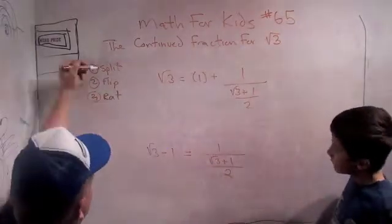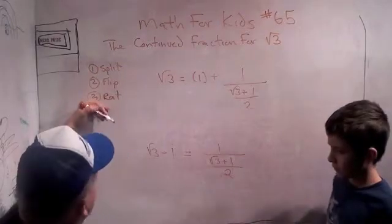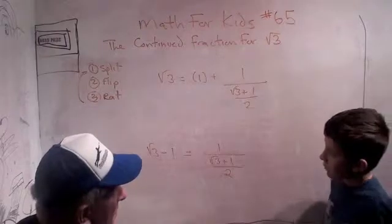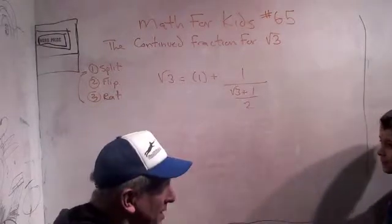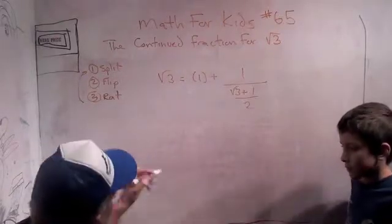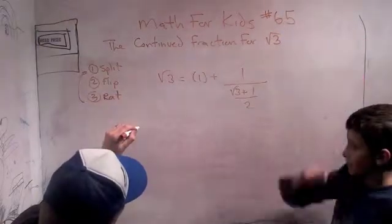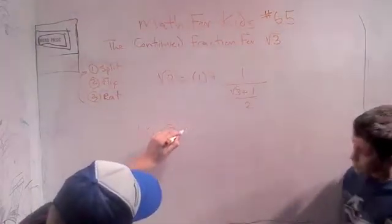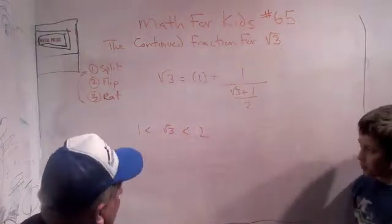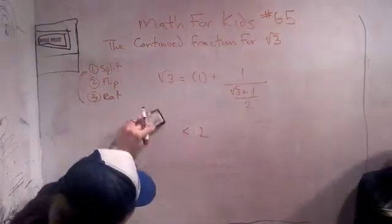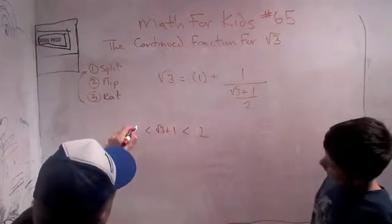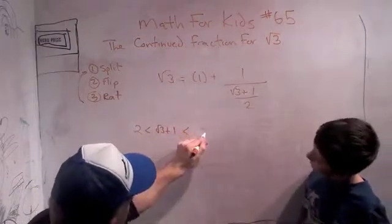We just showed that the square root of 3 minus 1 equals 1 over the square root of 3 plus 1 divided by 2. So we split, we flipped, and we ratted. Now we have to go back to the beginning — the split part. Remember that 1 is less than the square root of 3, which is less than 2. Now we have the square root of 3 plus 1, so we add 1 to each: 2 is less than the square root of 3 plus 1, which is less than 3.